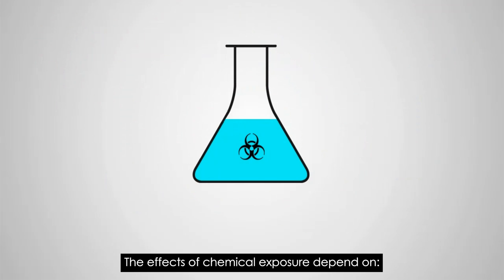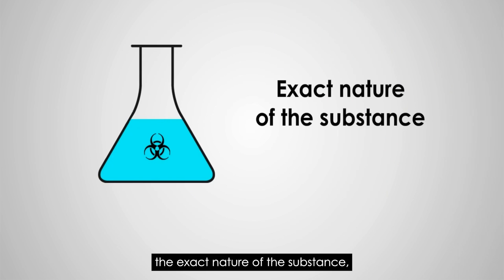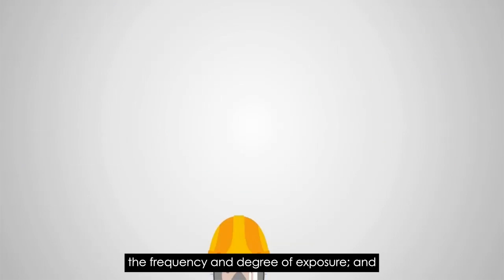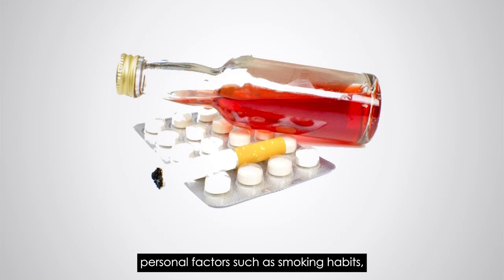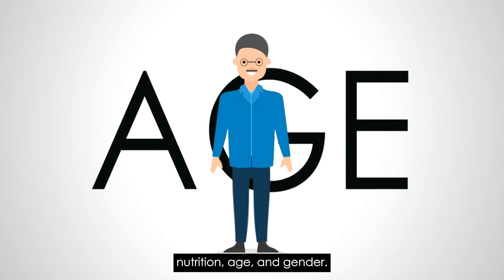The effects of chemical exposure depend on how the toxin enters the body, the exact nature of the substance, the frequency and degree of exposure, and personal factors such as smoking habits, alcohol consumption, medication use, nutrition, age, and gender.